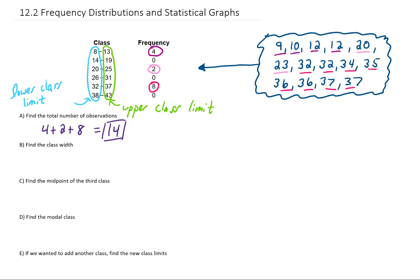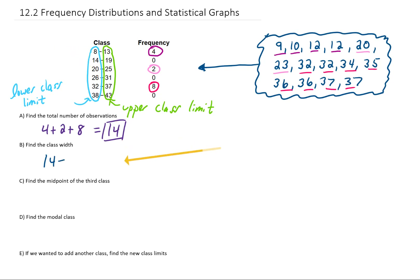If we want to find the class width, it might be tempting to just subtract 13 minus 8. However, that would be incorrect. To find the class width, we actually subtract two upper class limits that are right next to each other, or two lower class limits that are right next to each other. For example, if we look at these two lower class limits, we can subtract 14 minus 8 and that gives us our class width.